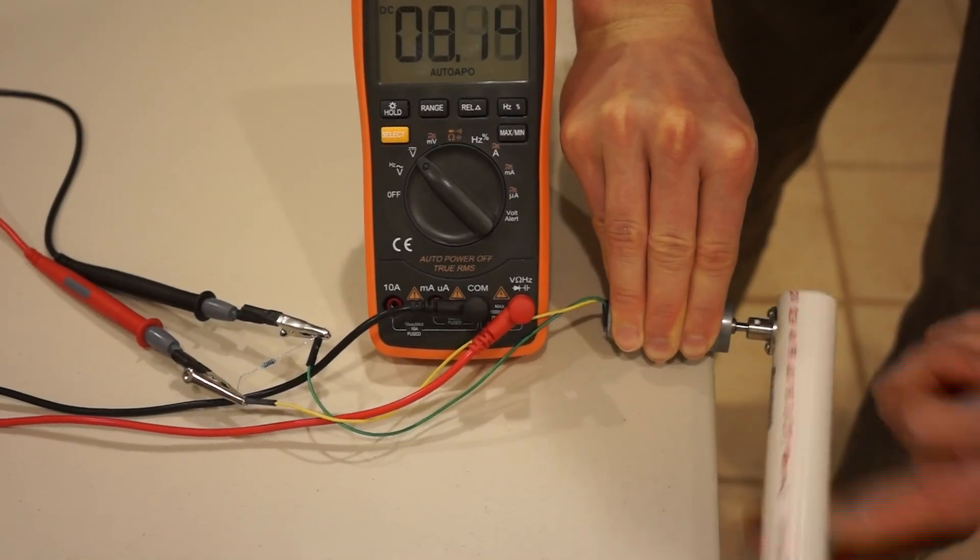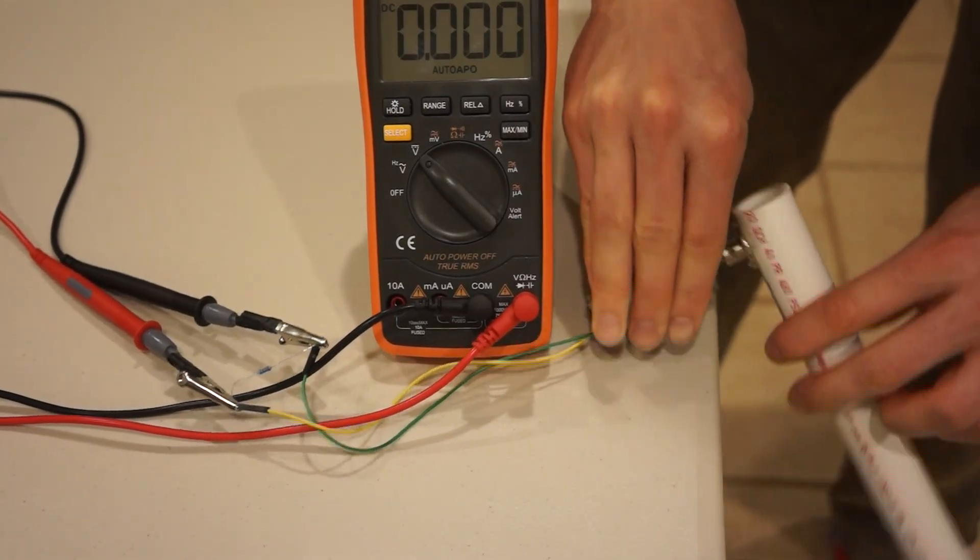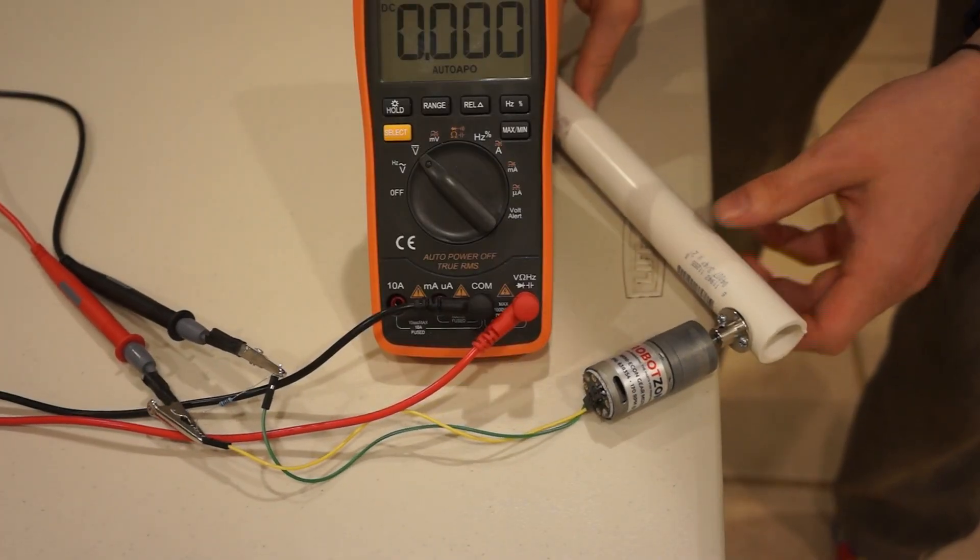So the thing is, even when I try to crank evenly, I'm not able to hold a steady 5 volts. So we're going to need to even out that voltage with a linear voltage regulator. Let's go with the LM317.